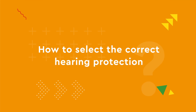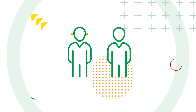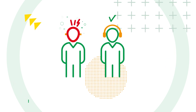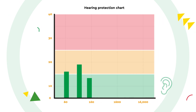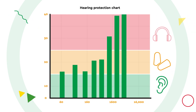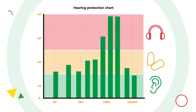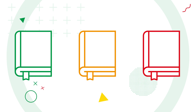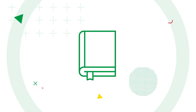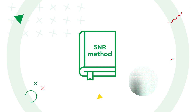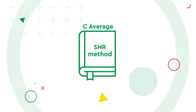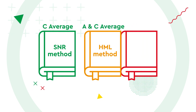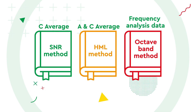Hearing protection devices play a key role in preventing noise-induced hearing loss, so selecting the correct device is important. Every hearing protector has its own unique spectrum of noise reduction that should be matched against the noise levels within your workplace. There are three ways in which hearing protection can be selected: the SNR method, which requires the measured C-average decibel levels; the HML method, which requires A and C average; and the octave band method, which uses the frequency analysis data.